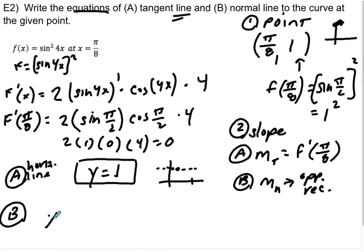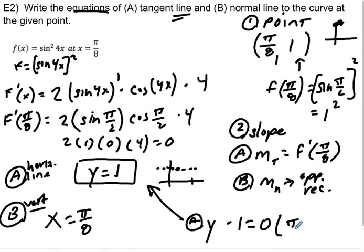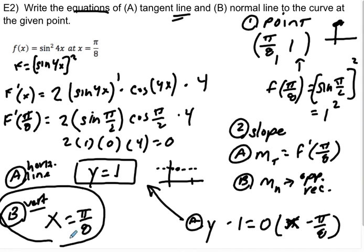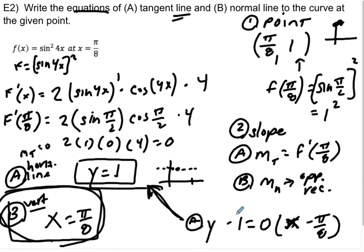The normal line is perpendicular to the horizontal tangent line, so it must be vertical: x equals pi over 8. You could write the tangent line as y minus 1 equals 0 times x minus pi over 8, but for the normal line you can't write undefined as a slope in an equation. So the best answers are y equals 1 for the tangent line and x equals pi over 8 for the normal line.